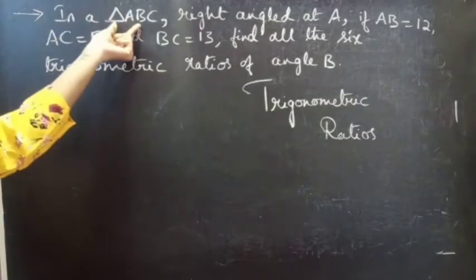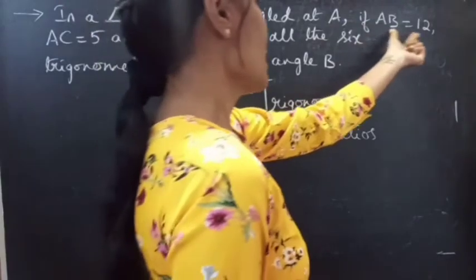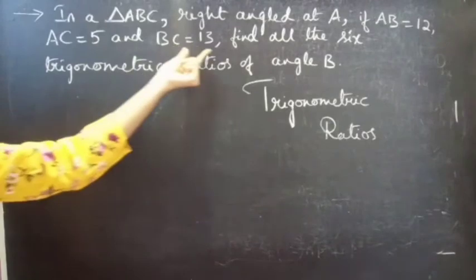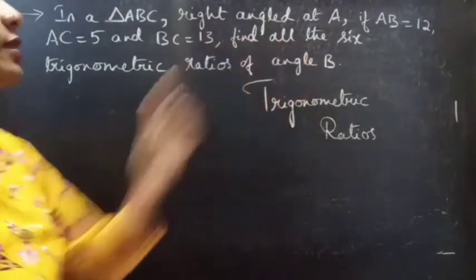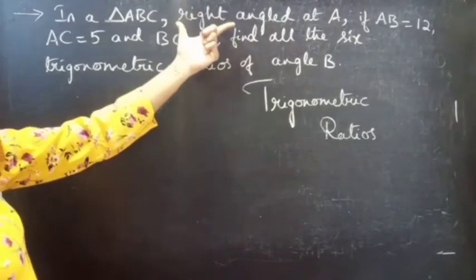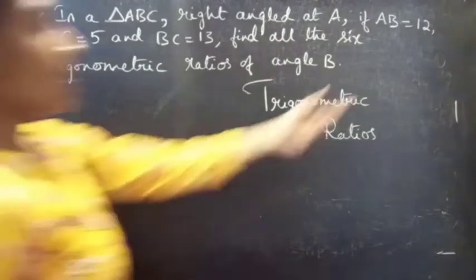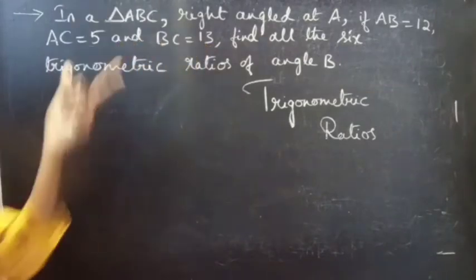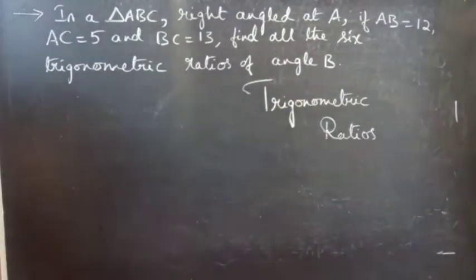In a triangle ABC, right angle at A, if AB equals to 12, AC equals to 5 and BC equals to 13, find all the 6 trigonometric ratios of angle B.